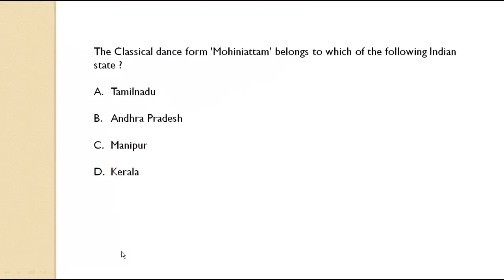The classical dance form Mohiniyattam belongs to which state? It belongs to Kerala. So remember: Kerala has two classical dance forms — Kathakali and Mohiniyattam. This is an important question for competitive exams.